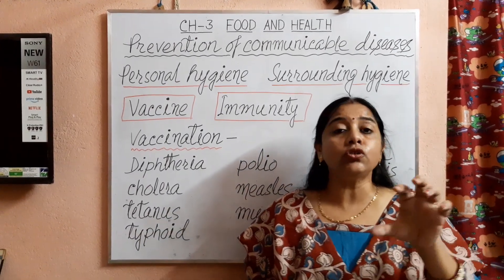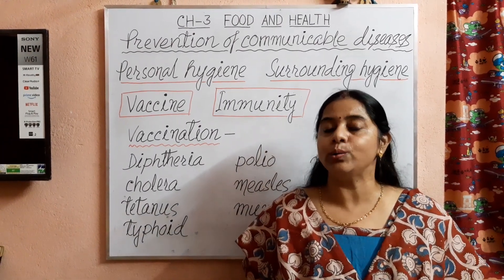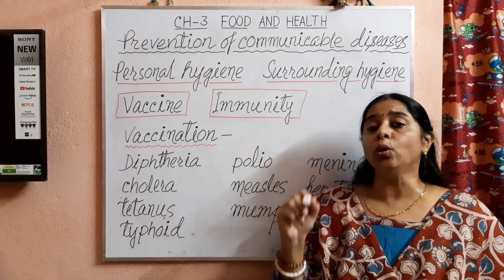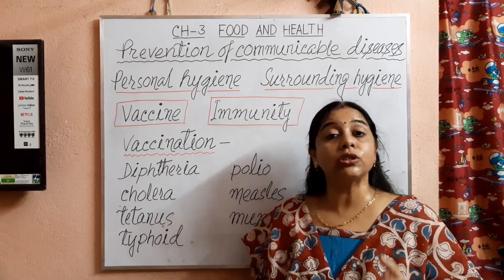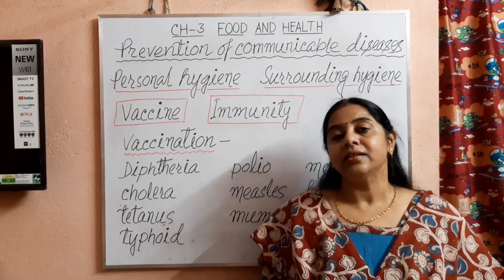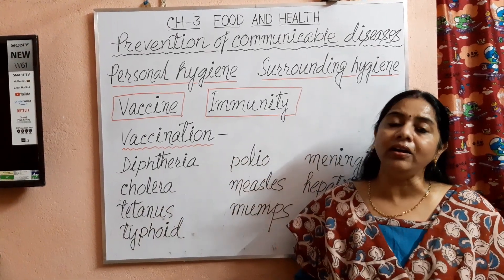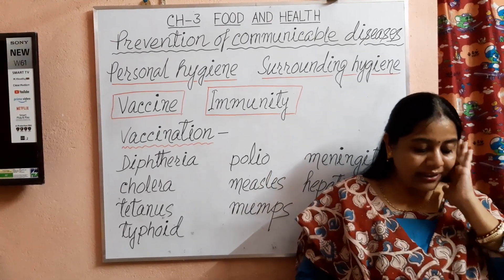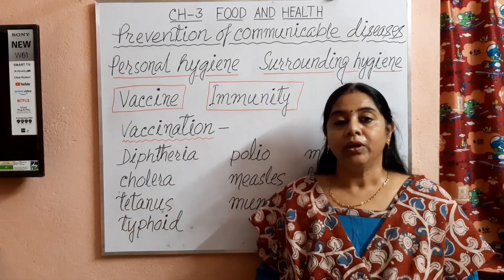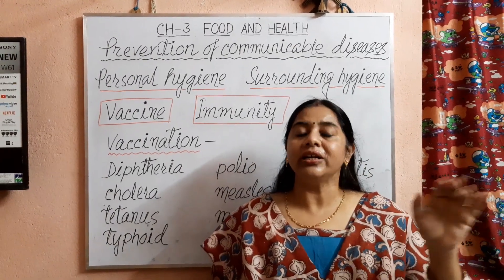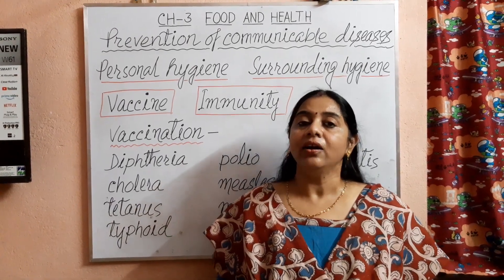The next point is we should not allow water to collect anywhere in our surrounding or inside our house. As all of you know, mosquitoes breed in stagnant water. Mosquitoes spread diseases like malaria, dengue, chikungunya, etc. So we should not allow water to collect near our houses. We should also use a mosquito net when we sleep, and use mesh on our doors and windows to prevent the entry of mosquitoes and flies inside our home.